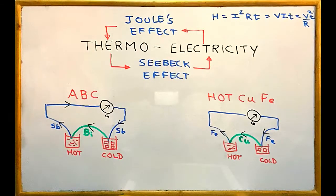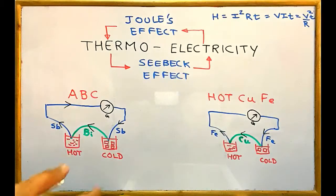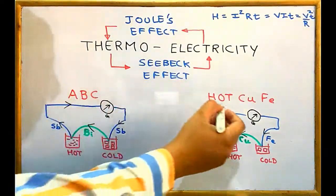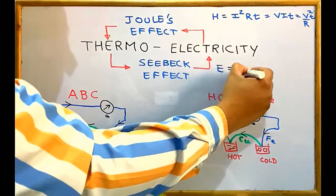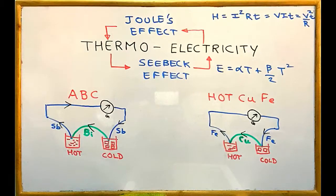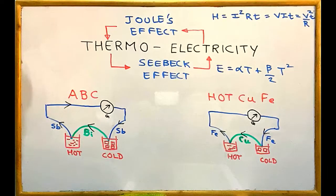These examples — antimony-bismuth (ABC) and copper-iron (hot coffee) — are what we call thermocouples. 'Couple' means two materials, and 'thermo' refers to heat. The formula for the EMF generated in the Seebeck effect is: E = αT + (β/2)T², where T is the temperature and α and β are constants. We can solve simple numericals using this formula.